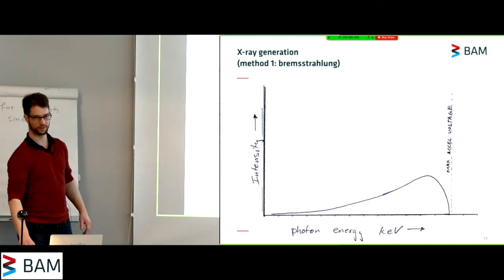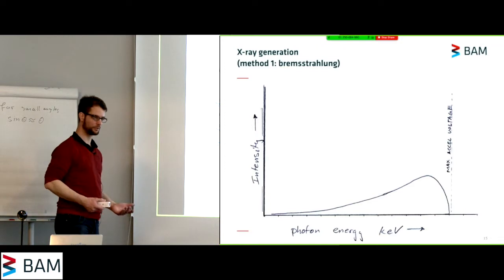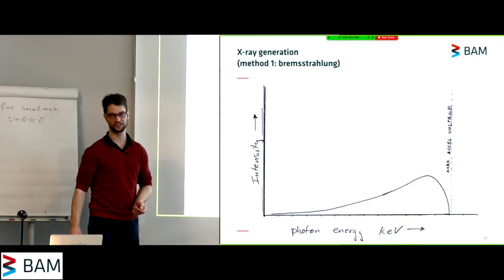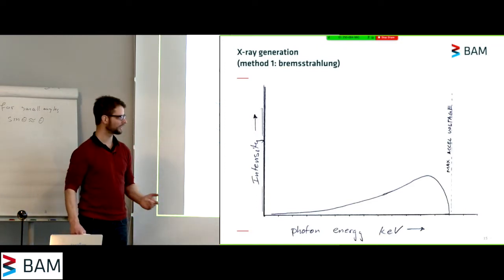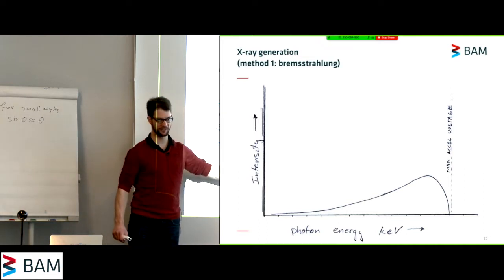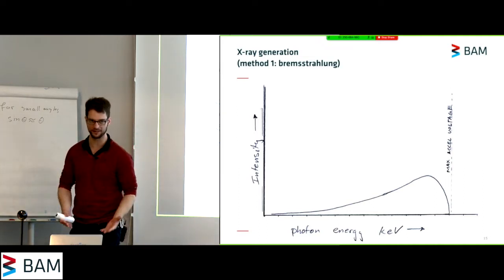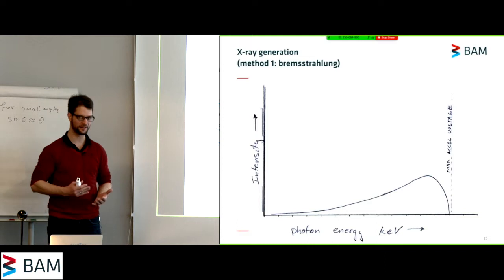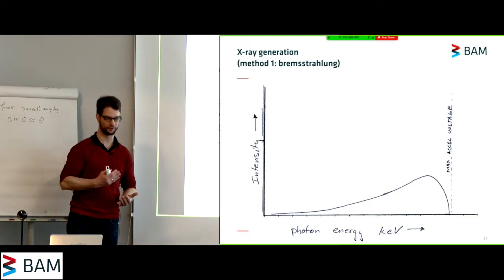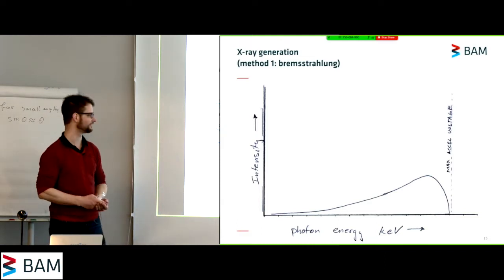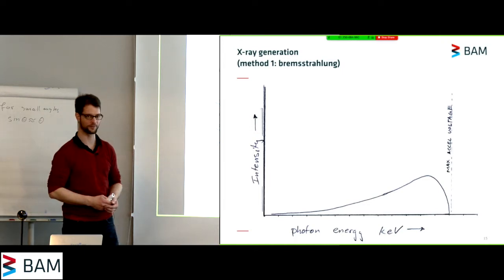But for us this is not particularly useful because in x-ray scattering we do like monochromatic radiation. X-ray scattering with polychromatic radiation has been attempted and theoretically is possible. It's just that the mathematics are very annoying to solve and people have tended to stay away from that afterwards.